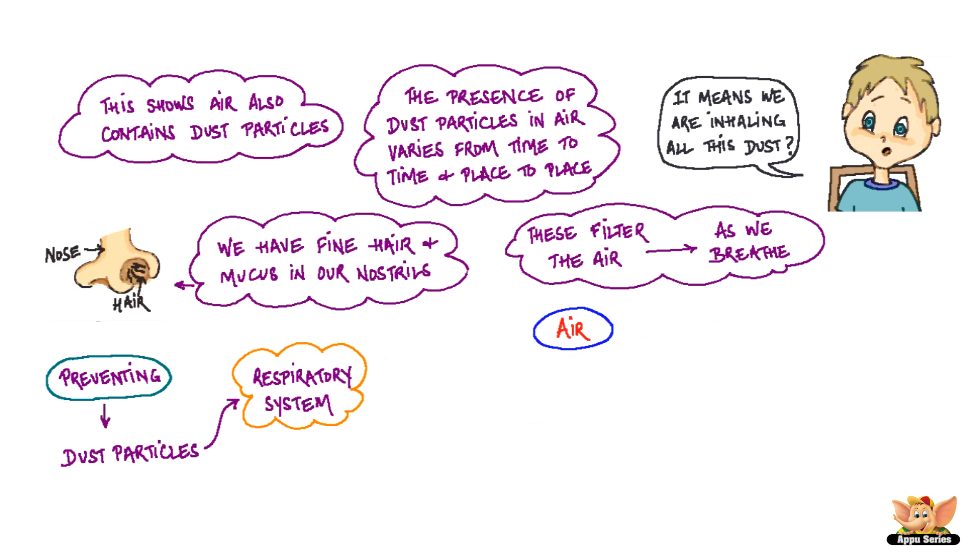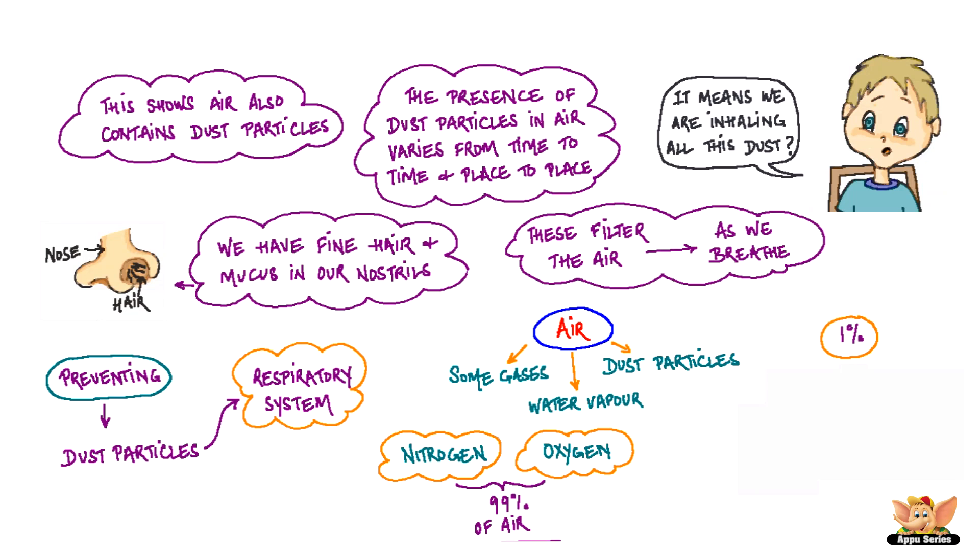So, we have learnt that air contains some gases, water vapour and dust particles. But it's only nitrogen and oxygen that make up 99% of the air. The remaining 1% is carbon dioxide and a few other gases, water vapour and dust particles.